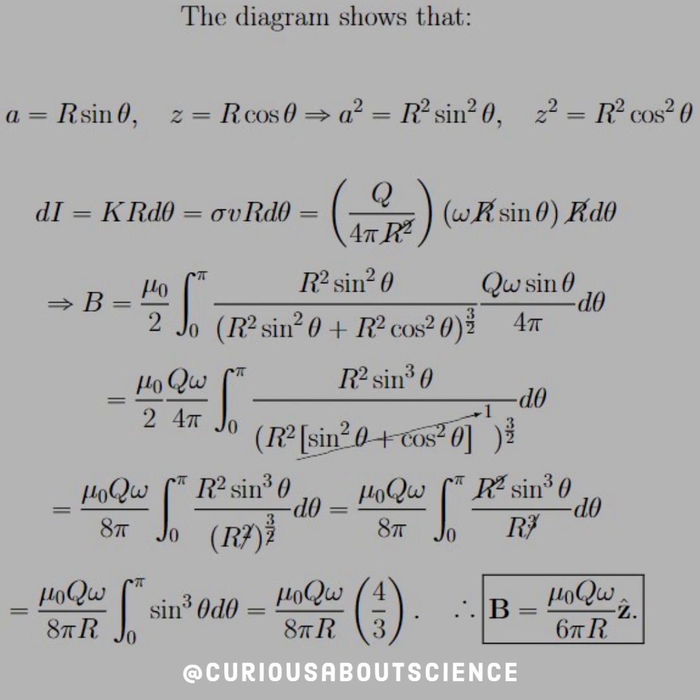But then we know that sigma is equal to Q divided by the surface area. So we have 4 pi R squared for sigma. And then we see that we put it all together, the R's cancel.